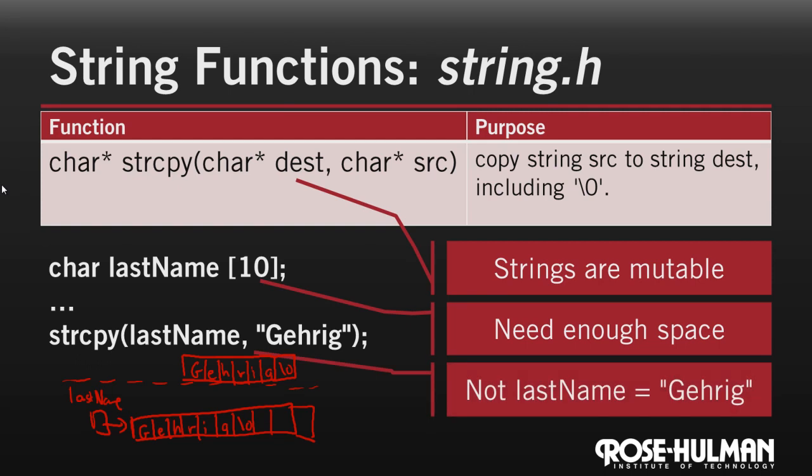Finally, we can't just assign last name gets Gehrig, because array variables can't. What do I mean by that? Well, array variables can't vary. Remember, array variables are pointers, but they're constant. Besides, it would require a loop to copy all the characters. But that's exactly what string copy does.